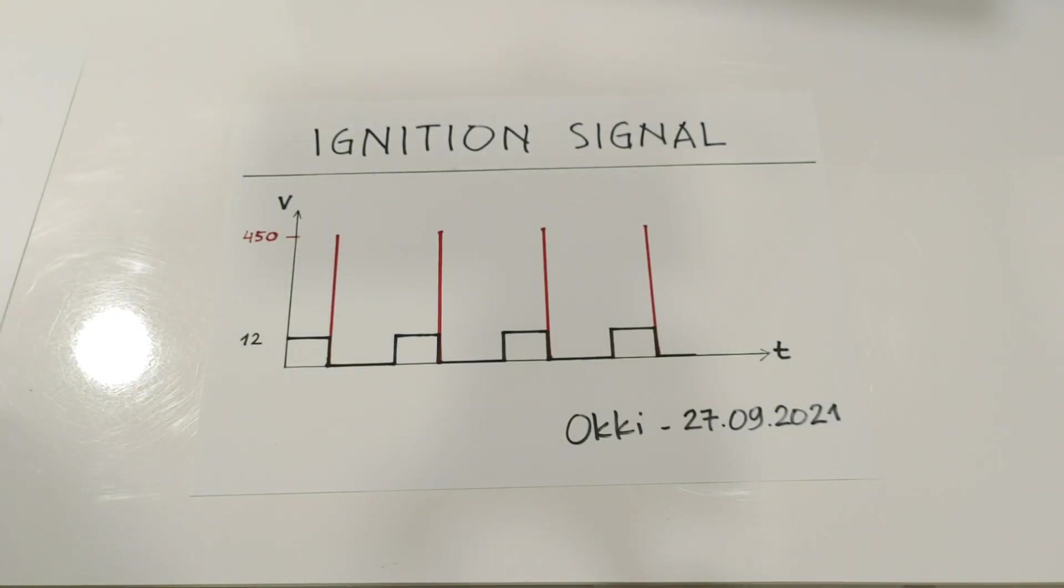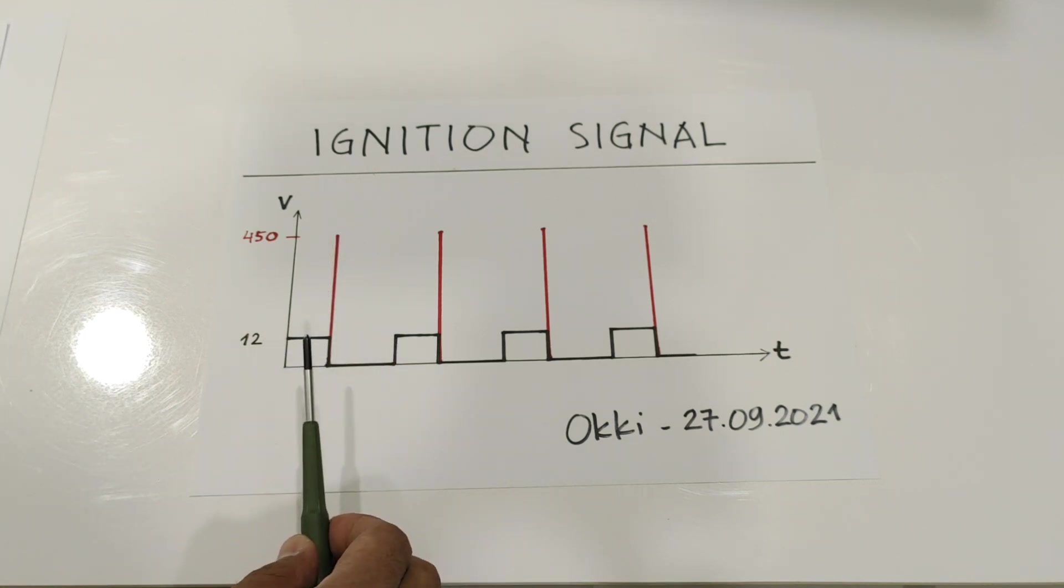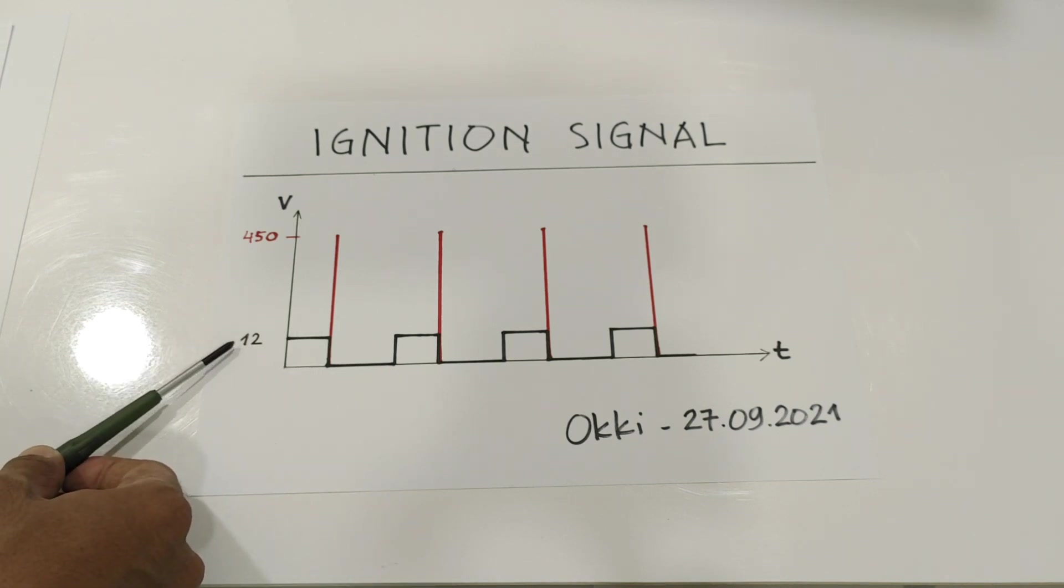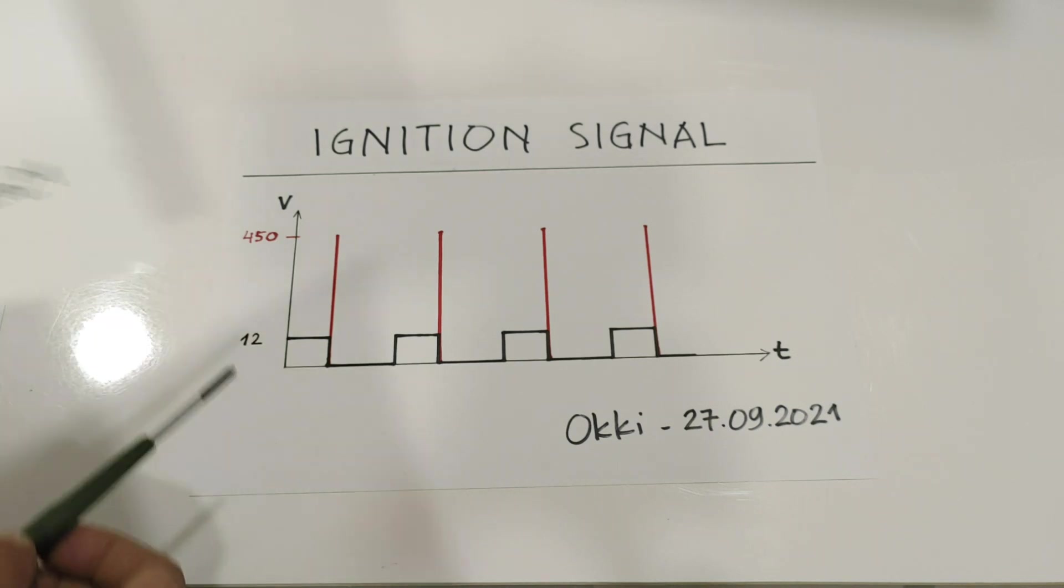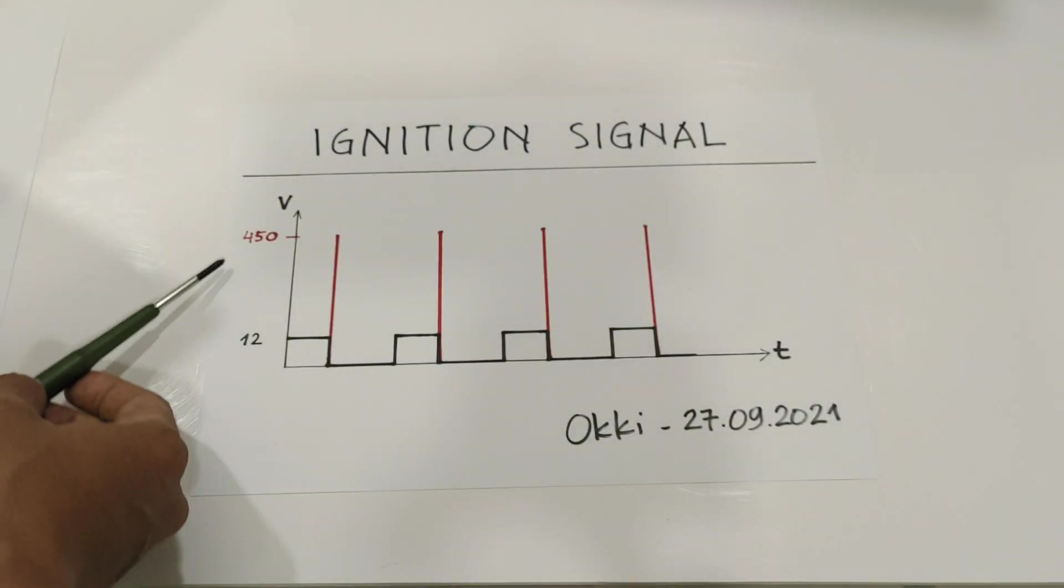And then we have another type of charging signal. At the typical ignition system we have 12V, and with this CDI system we will have 450V.